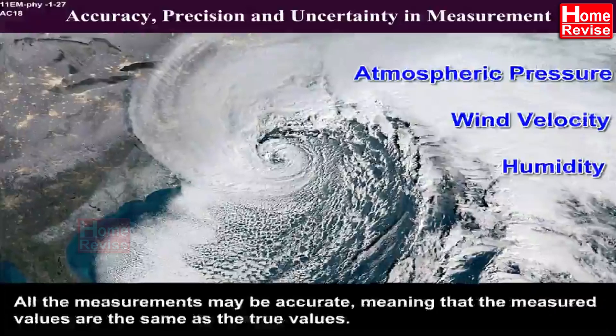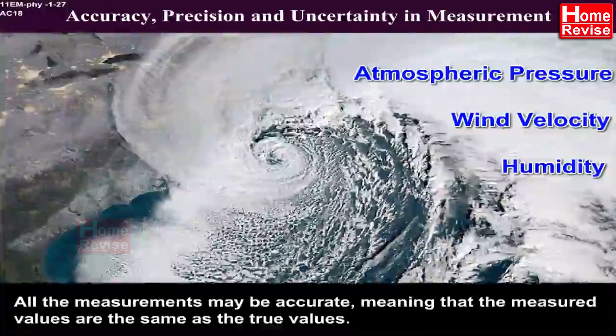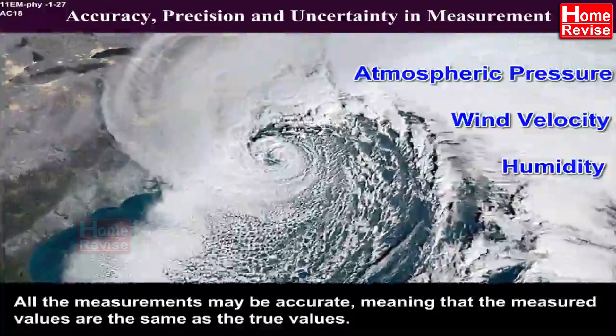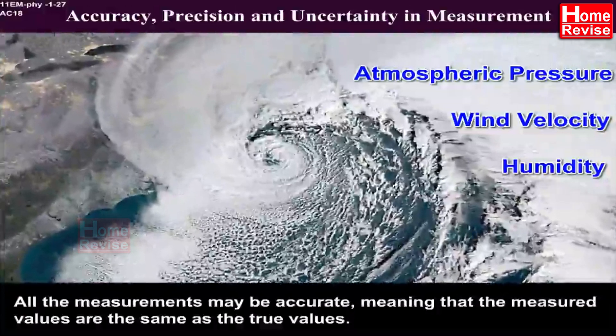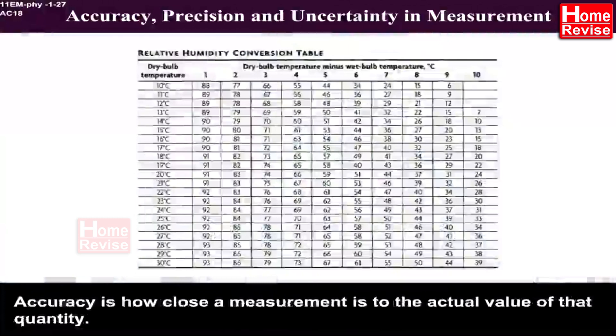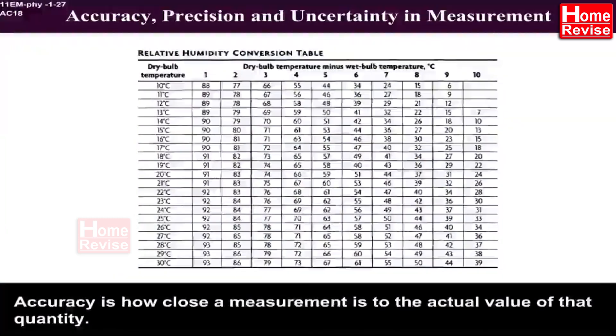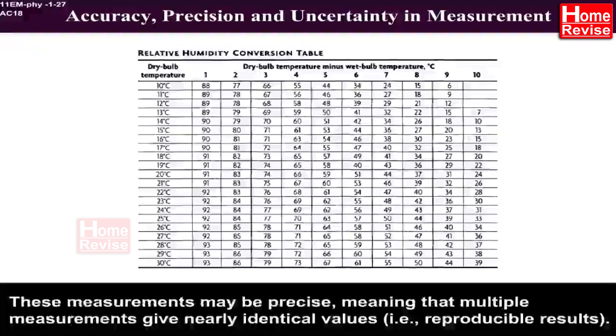All the measurements may be accurate, meaning that the measured values are the same as the true values. Accuracy is how close a measurement is to the actual value of that quantity. These measurements may be precise,